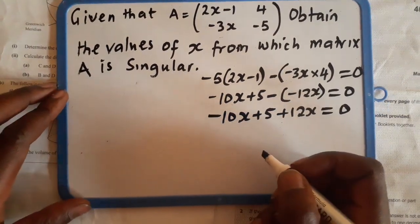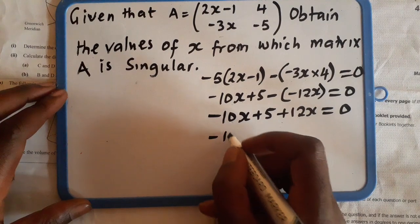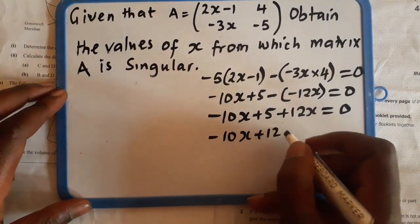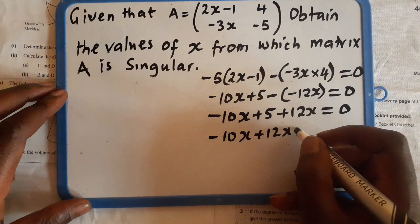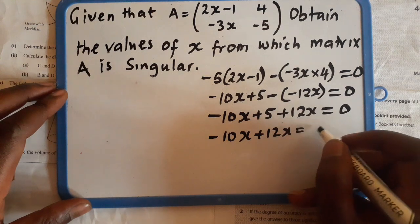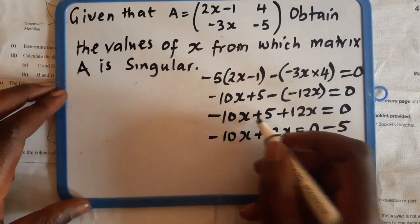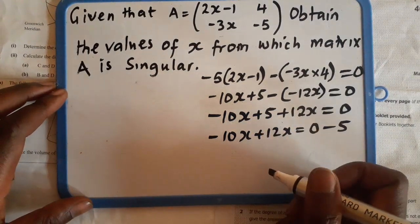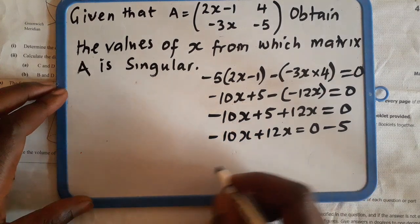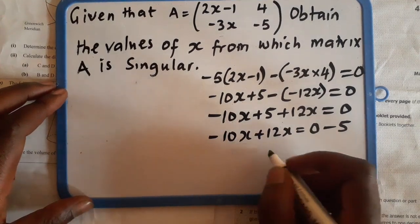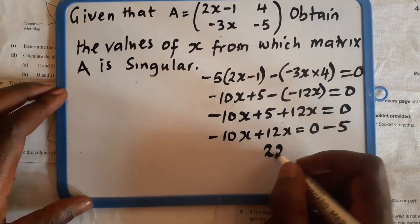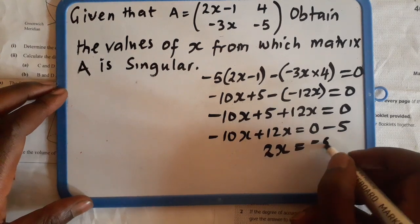So at this point, we can say negative 10X plus 12X equals 0 minus 5. We take this to the other side. So this gives us 2X equals negative 5.